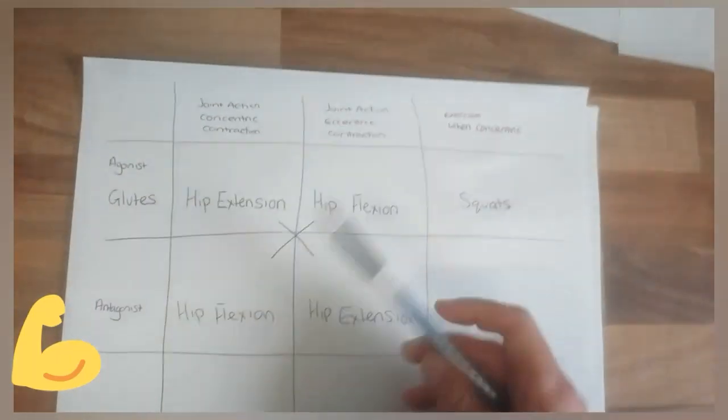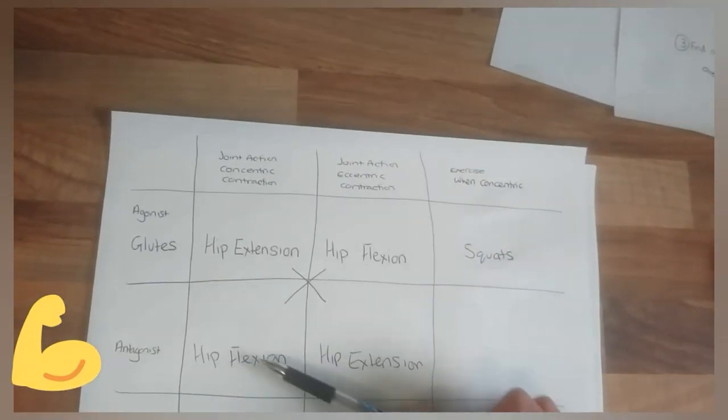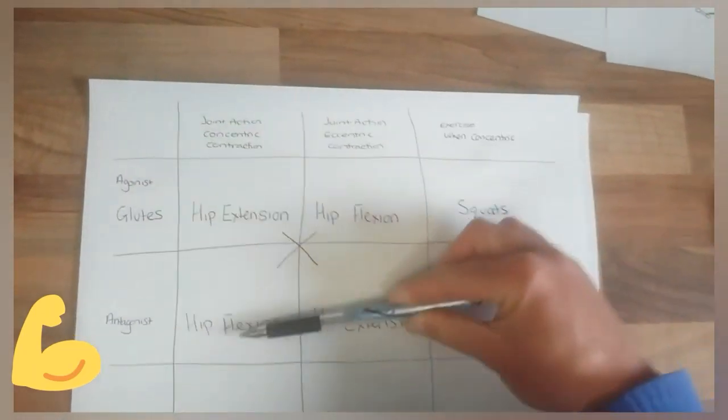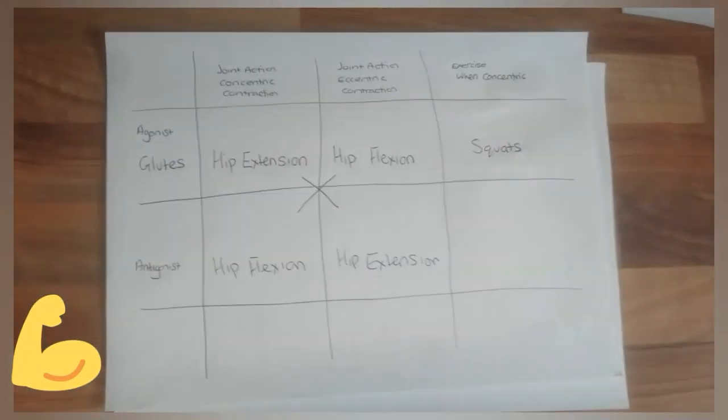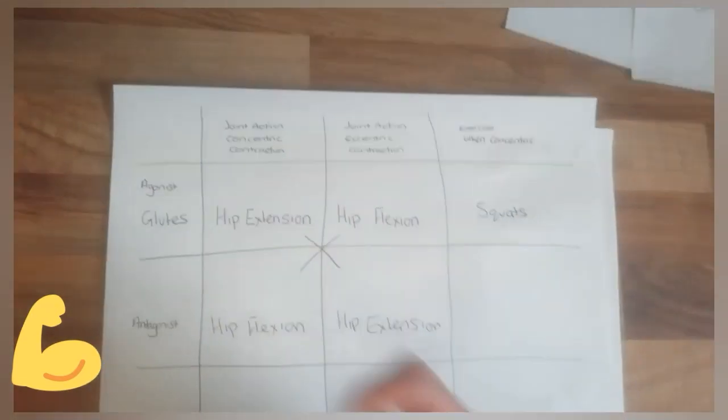They are agonist, antagonist pairs. So they are working opposite, which means whatever muscle it is we're working on is going to have hip flexion as its concentric contraction. So let me think about this. If I was to concentrically reduce my flexion in my hips and flex my hips, what muscle would I be using?